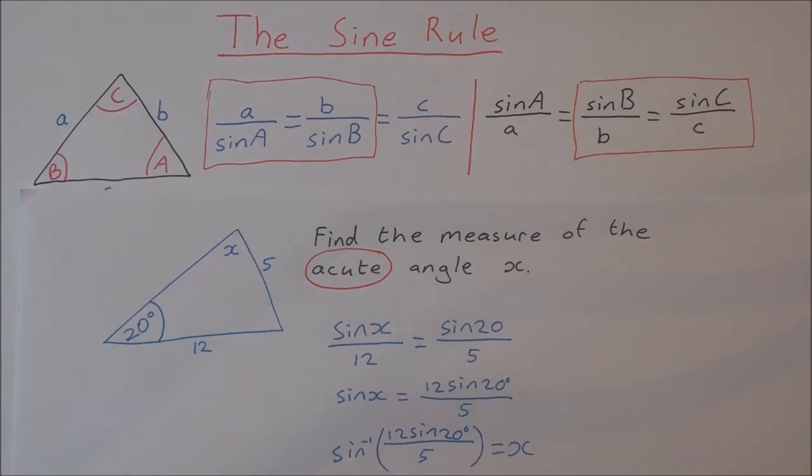So if you type that into your calculator there you should get 55.17 degrees. Give that a go and see if that's what you get. If it isn't what you get then just double check that you're in degrees mode and just double check that you have it typed in correctly and you should get 55.17 degrees.